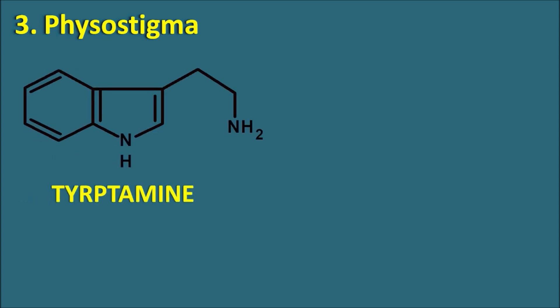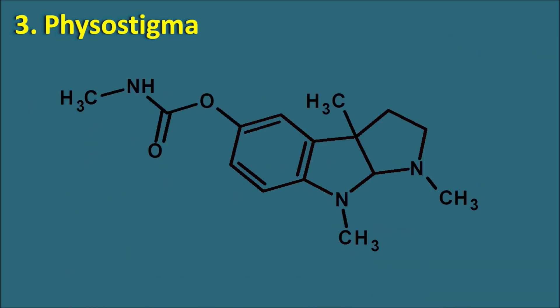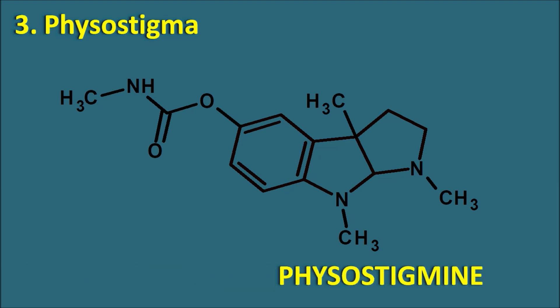The third group is Physostigma. Physostigmine again has the indole nucleus obtained from tryptamine. When the bond between the carbon and nitrogen is closed, it forms a ring system in Physostigma — a pyrroloindole nucleus, where indole is fused with a pyrrole ring. Physostigmine is a natural acetylcholinesterase inhibitor acting as an indirectly acting cholinergic agonist. It selectively increases muscarinic actions and is used in the treatment of glaucoma.